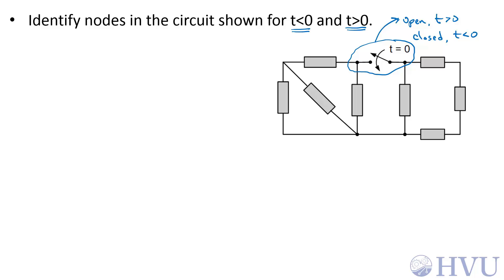That means this circuit is fundamentally changing between times t<0 and t>0, so the nodes will not necessarily be the same between those two times. For t<0, the switch is open and looks like an open circuit. For t>0, the switch is closed and looks like a short circuit or perfect conductor.